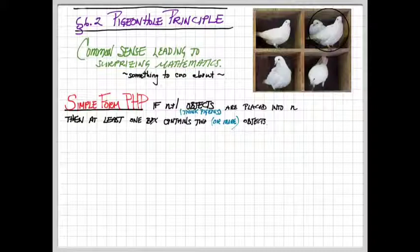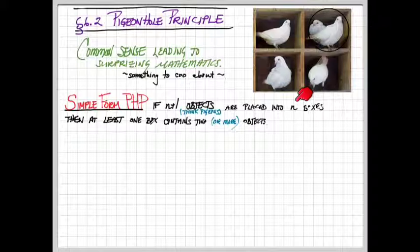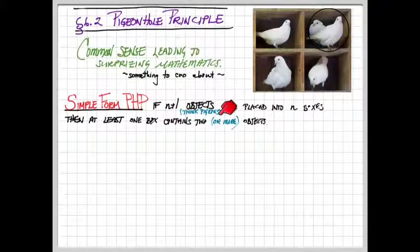Let's start by stating the simple form of the pigeonhole principle. If n plus 1 objects, those are going to be our pigeons, are placed into n boxes, the conclusion is that at least one box contains two or more objects.